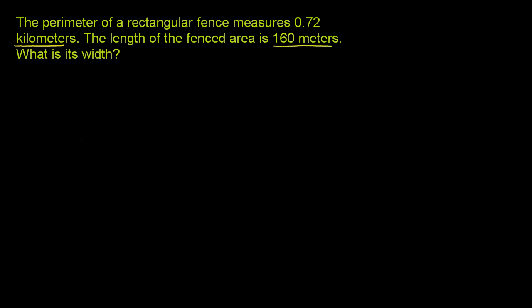So we have a rectangular fence. Let me draw it. So that is a rectangle. You can imagine we're looking from above. This line is the top of the fence. And if you take its perimeter, the perimeter is the distance around the fence. If you take this distance plus this distance plus that distance plus that distance, it's going to be 0.72 kilometers. That's the total distance of all of the sides.